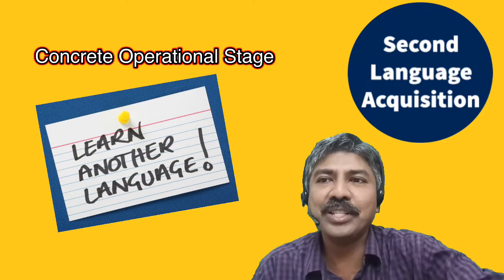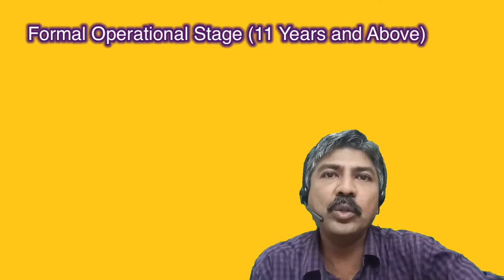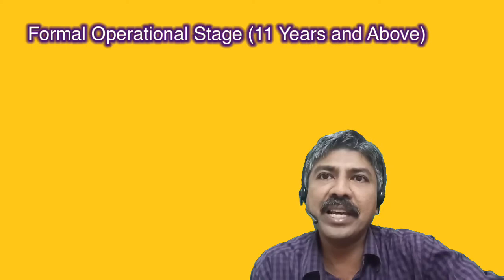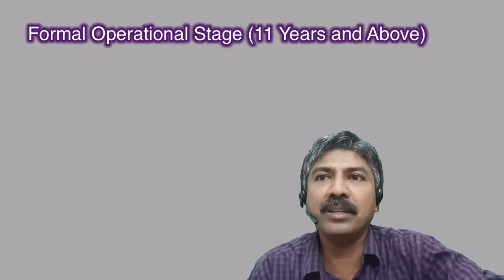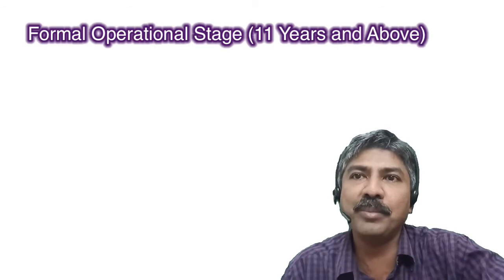Formal operational stage. This stage begins at the age of 11 and continues into adulthood. With the ability for abstract reasoning, the child can think in abstract, idealistic and logical ways, which helps them understand new words, complex sentences with underlying motives and concepts. Hypothetical deductive reasoning ability helps to develop a scientific approach to address problems and systematically reach conclusions.